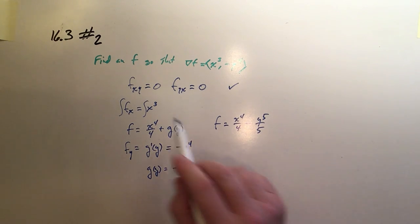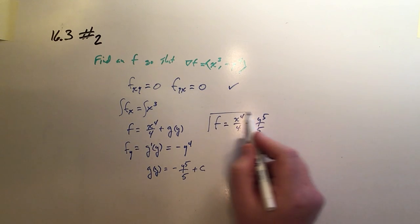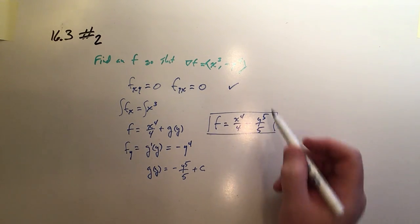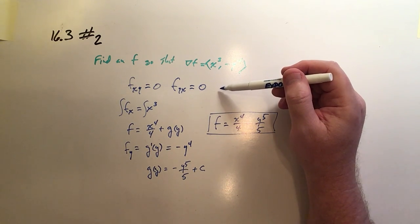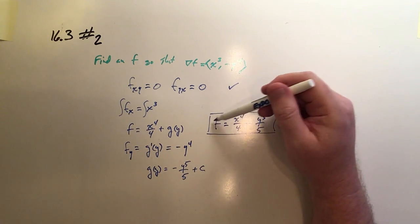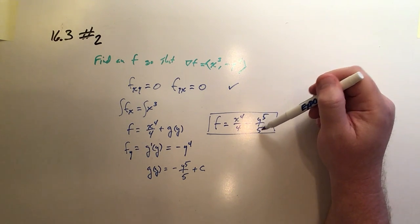Because anytime we're actually going to use this reconstructed function f, we're going to do a definite integral with it. So there it is. In this case, this gradient actually came from a conservative function. And that conservative function was x^4/4 - y^5/5.